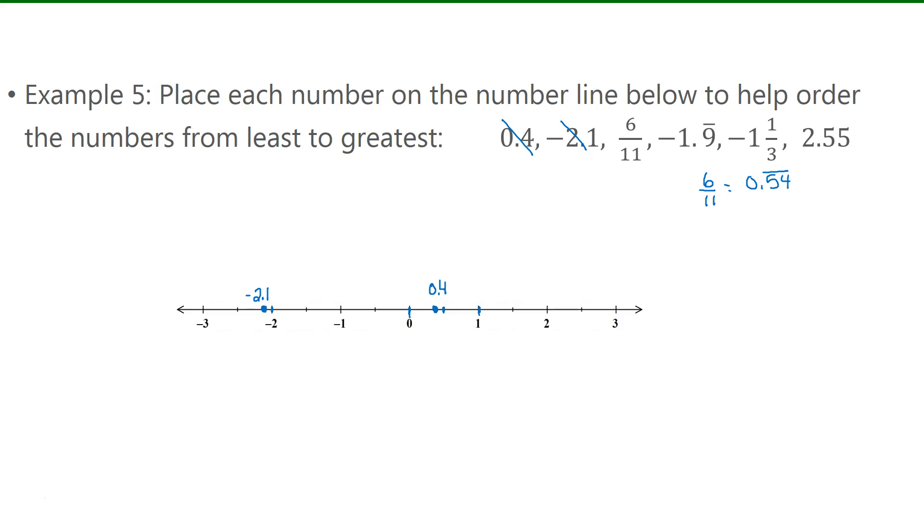So if I go to 0.5 and just past that, that's where 0.54 would be, roughly. You just need an estimate. It doesn't need to be exact. I'll just write 6 over 11 underneath the dot there.